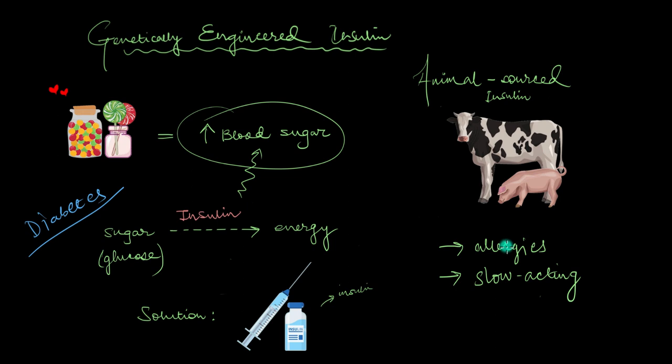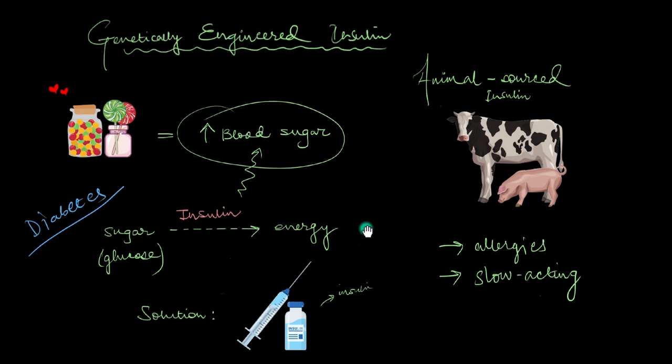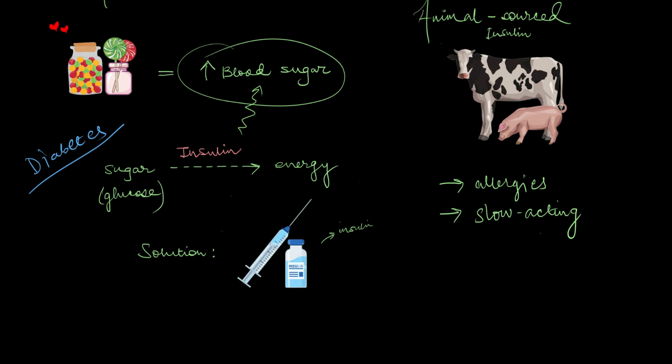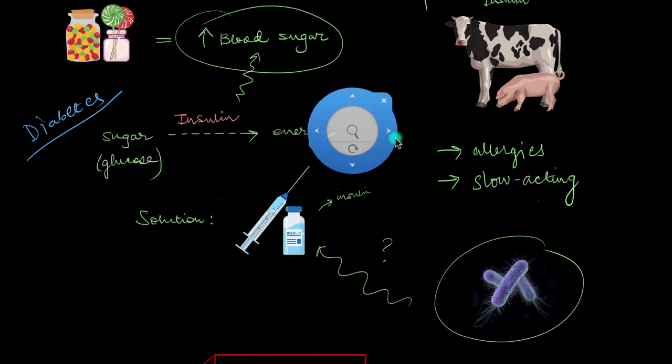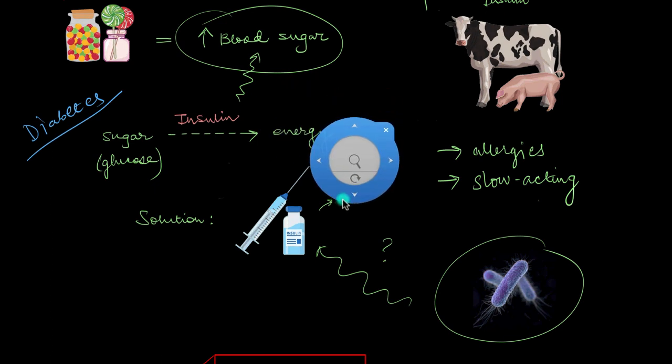Sometime in the 1980s, scientists thought, what if we could use bacteria instead? What if we use bacteria in order to produce this insulin? And it is this thought exactly which paved the path towards genetically engineered insulin or human insulin or humulin. Genetically engineered insulin is also called human insulin or humulin.